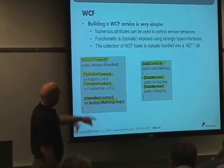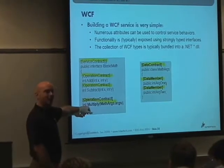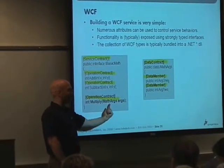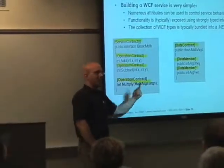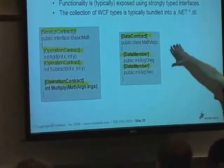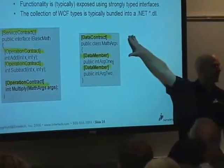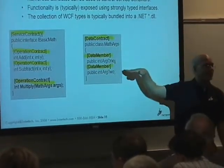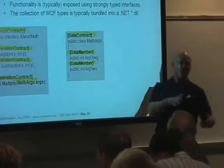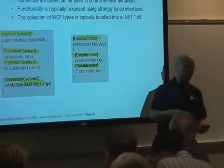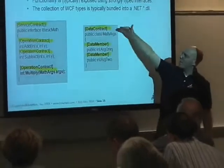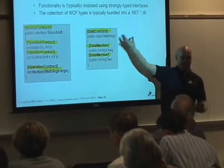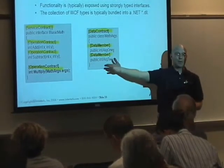Now notice this final guy on the bottom, the multiply method. He is using a custom class called MathArcs. Well, this gives me a chance to build something called a data contract. And this will let me basically say, I have custom data types that are well beyond the basic simple data types that you could expose — ints, booleans, strings. And I'm going to apply the data contract and data member attributes so that the runtime can correctly marshal this stuff to the caller.